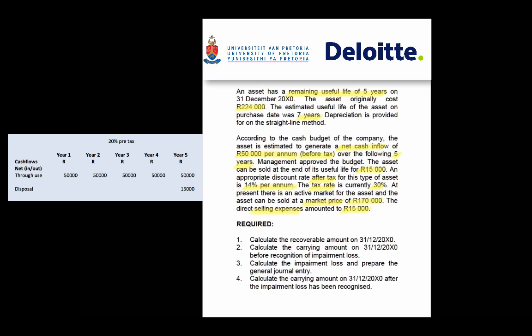The key information to search for in the given data includes your cash flow information — here a series of annual net cash inflows of 50,000 Rand. It may be given as specific inflows and outflows requiring you to calculate the net amount. The discount rate is also given; remember we work with before-tax cash flows. The cash flows are before tax, but the discount rate is given as an after-tax amount, and the tax rate allows you to work this back to a before-tax rate.